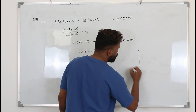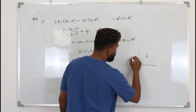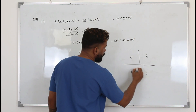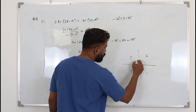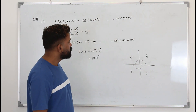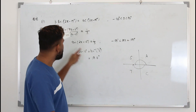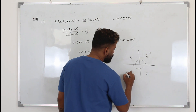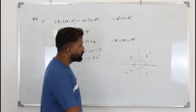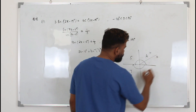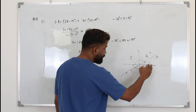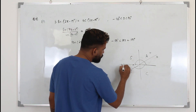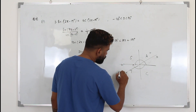Now draw the ASTC diagram. Our limit is negative 180 to positive 180. You need to look for a quadrant where tan theta is positive. Tan theta will be positive in the first quadrant, where the angle is theta, and also in the third quadrant — since we're talking about a negative limit of minus 180, that angle is minus 180 plus theta.